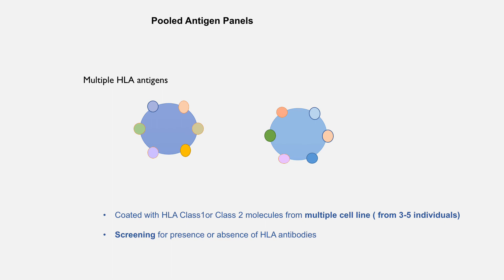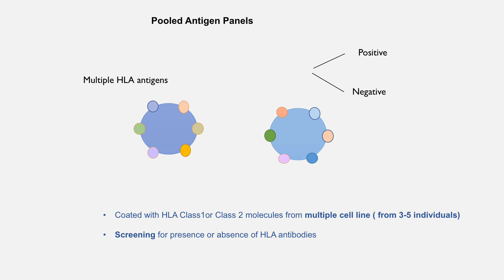We use three different types of beads for assessment of HLA antibodies. The first type is called pooled antigen panels or pooled antigen beads. These beads have HLA antigens derived from 3 to 5 persons on their surface, so each bead has many HLA antigens derived from multiple persons. Each bead has either HLA class 1 or class 2 molecules. These beads are used for screening purposes, and the result will be either positive — indicating HLA antibodies are present — or negative, indicating HLA antibodies are not present.